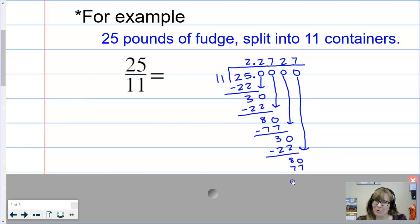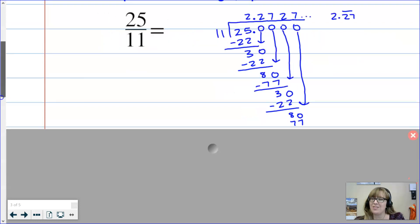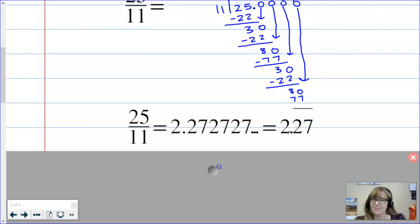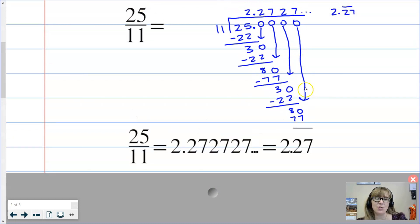I hope at this point, maybe even earlier, you realize that we're starting to see some of the same things that we've already seen before. That's because what we have here is a repeating decimal, and I'm hoping that you recognize that before I even had to point it out. What we really have is 25 elevenths, or 25 divided by 11 is 2 and 2 7 repeating.